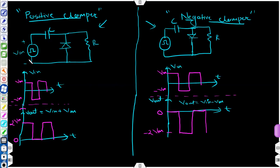A square wave with Vm in the positive direction and minus Vm in the negative direction, with time period T, is used. A capacitor with a diode - N side connected to the positive line and P side connected to the downward line. An easy way to remember: this diode symbol is like an arrow directing upward, so it will shift the waveform in the upward direction. Students often get confused whether this is positive or negative - just remember the arrow direction indicates the shift direction.